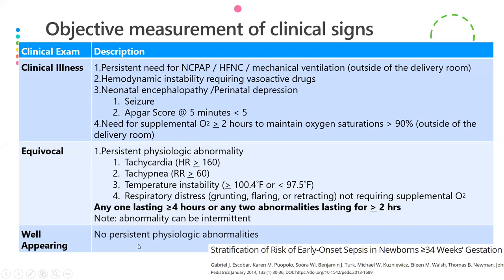In normal-appearing babies, there are no physiological abnormalities. In equivocal findings, there are persistent physiological abnormalities — tachycardia, tachypnea, temperature instability, or respiratory distress not requiring oxygen — lasting more than four hours for one sign, or more than two hours for two or more signs.